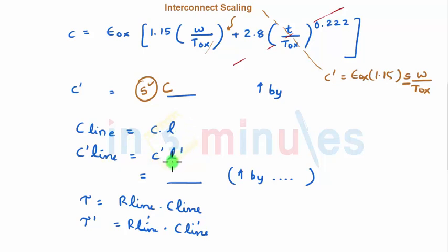C line is given by C into L. L does not change. C increases by a factor of s. So it is s into C into L. That means C line also increases by a factor of s.